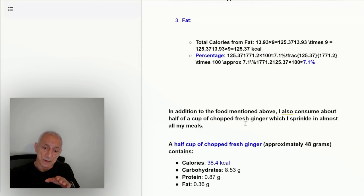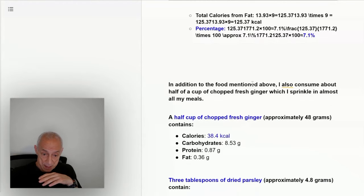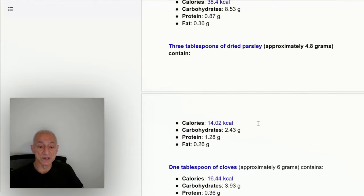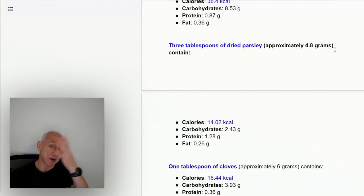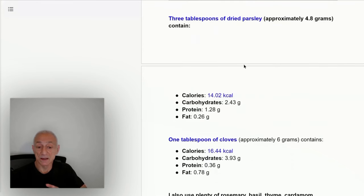In addition to the foods I mentioned above, I eat about a half a cup of chopped fresh ginger. I sprinkle it on almost all my meals. It's organic, fresh ginger. As you can see right here, it's about 38 calories. I also use three tablespoons of dried parsley. I made a video on dried parsley. There's a reason—these things are full of vitamins and minerals, 14 calories. I don't care about the calories. It's just that it has so many good compounds. I'm calorie restricting, and I work out, so I need these extra minerals and vitamins. Although I take a multivitamin, I still use this.